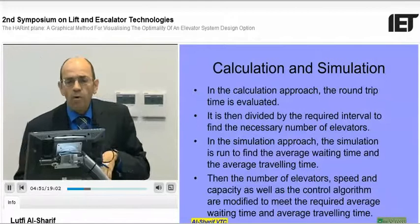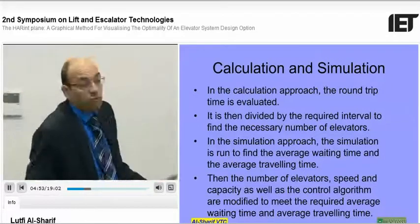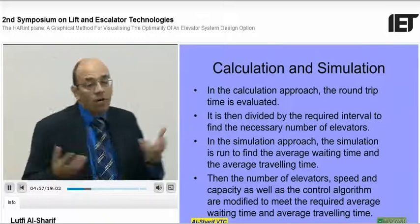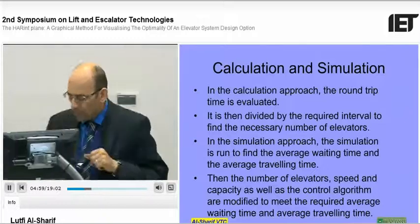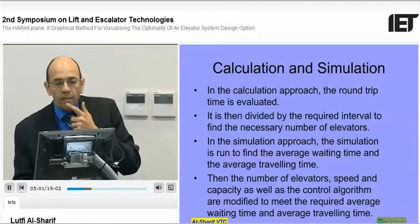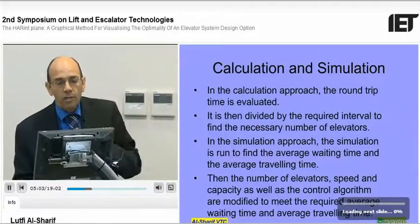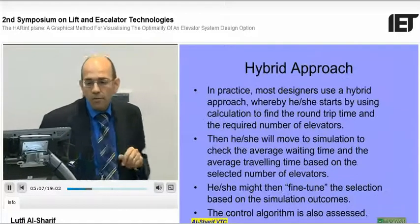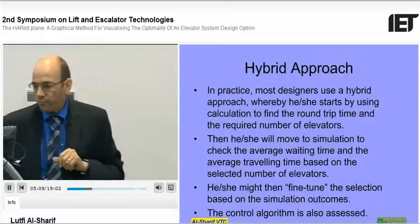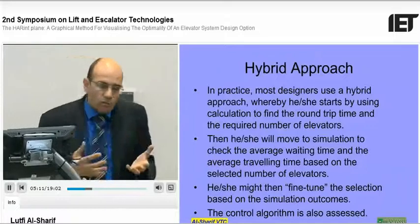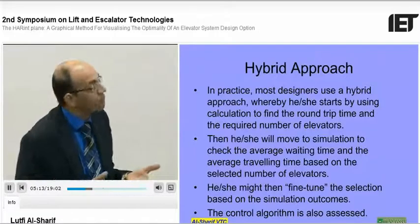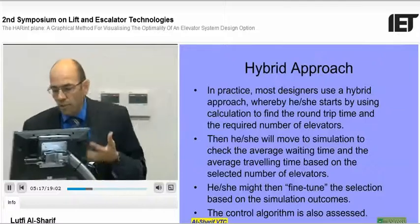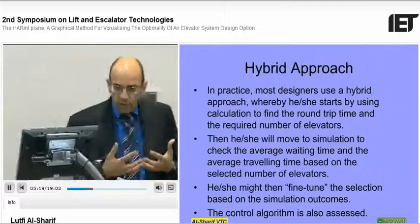The classical approach: we find the round trip time — RTT or tau, whatever your notation — divide by the target interval, which should be a user requirement, and then go to simulation for all the fine tuning. That's the hybrid approach. What I'm trying to say is calculation is not dead. Calculation will still be there for some time. We do need calculation; it offers us the transparency.